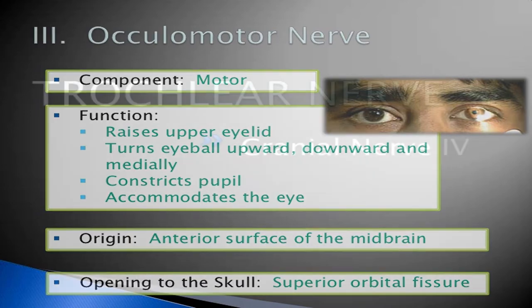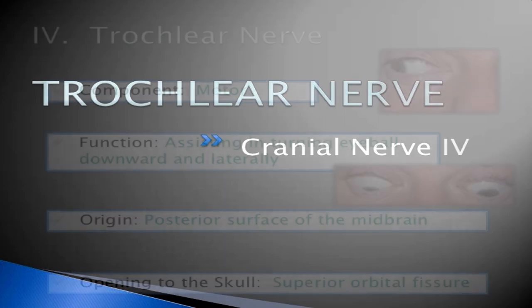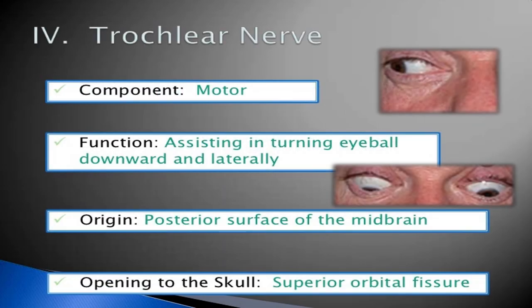The trochlear nerve is the fourth cranial nerve. Its component is motor. Its origin is the posterior surface of the midbrain. The opening of the skull is the superior orbital fissure.